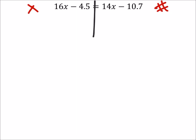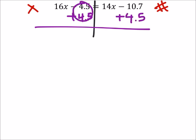So when I look at this, I've got the 16x. That's where it should be, but I've got minus 4.5, which is not on the correct side. So to get rid of it, I'll have to add 4.5. And that makes that a zero, but if I do it to one side, I've got to do it to the other side as well.